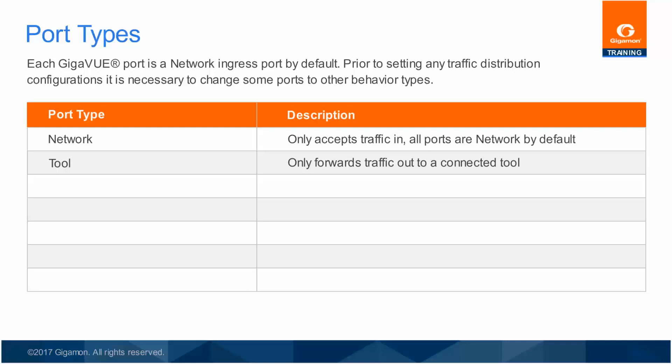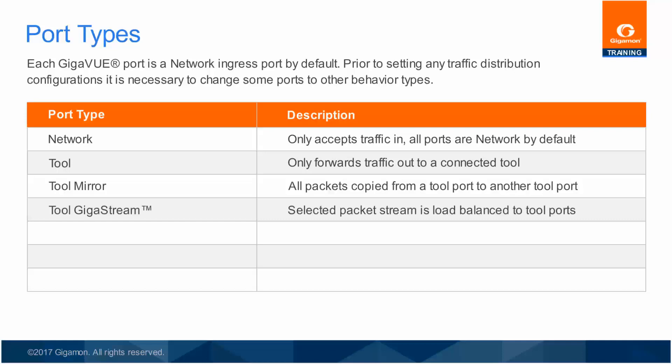Other possible port type configurations include Tool Mirror, which sends a duplicate copy of all packets forwarded to one tool port to another tool port on the same node. Tool Gigastream sends all outbound packets load balanced across a group of two or more tool ports using a hashing algorithm to ensure that packets in the same conversation go to the same tool.